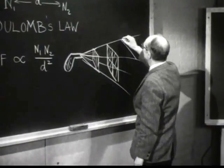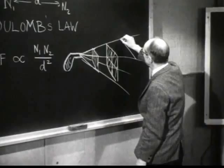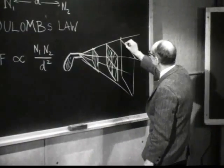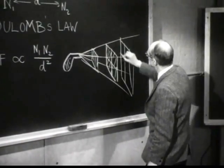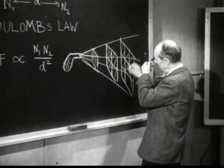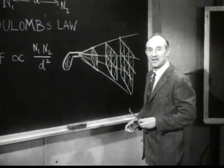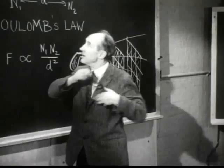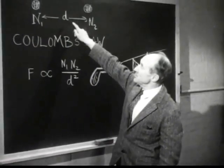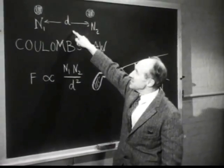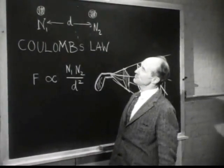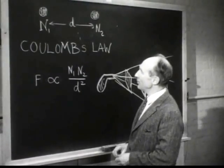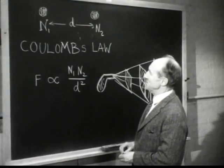At three times the distance, three pieces of toast by three pieces of toast — altogether nine pieces of toast — and you would get one ninth of the buttering. A century after Newton guessed an inverse square law for universal gravitation, Coulomb established the similar law for electric forces. I'll see you next time.